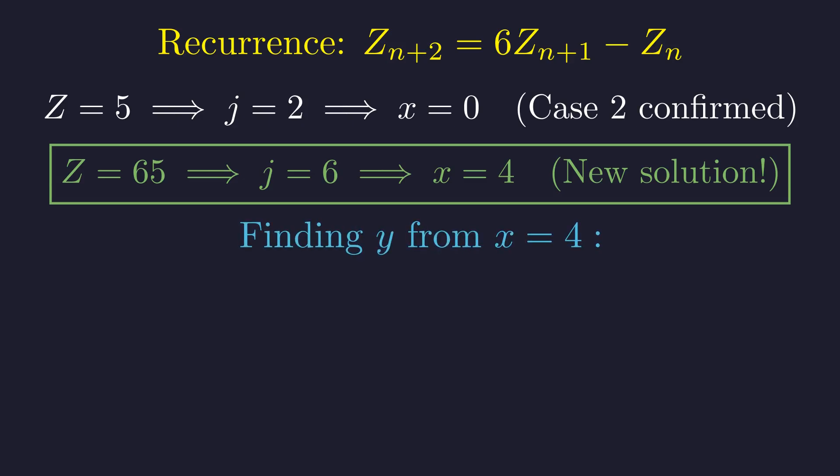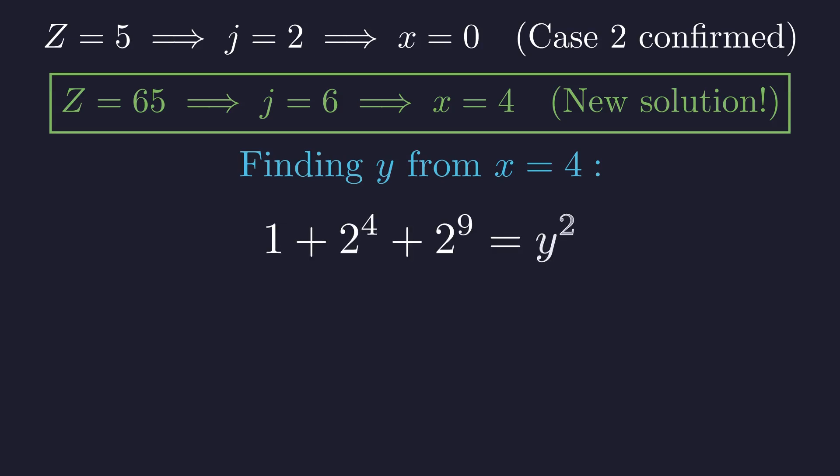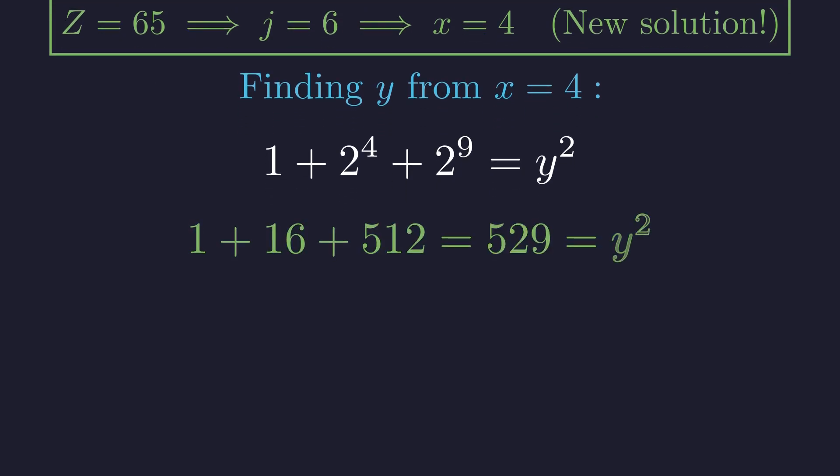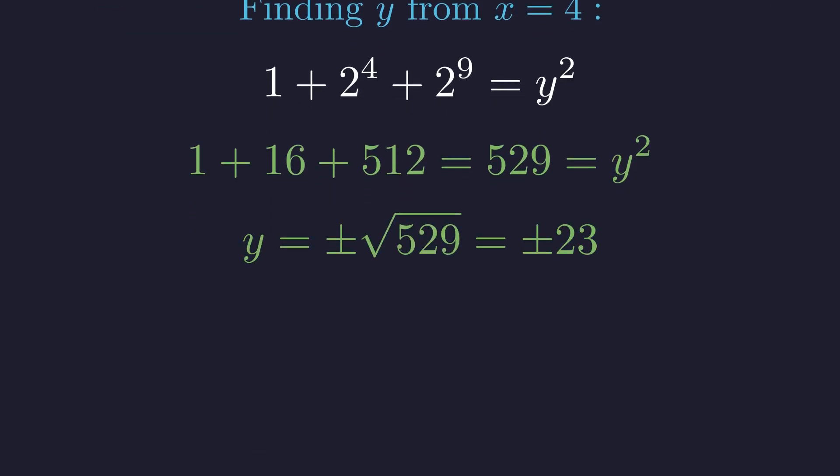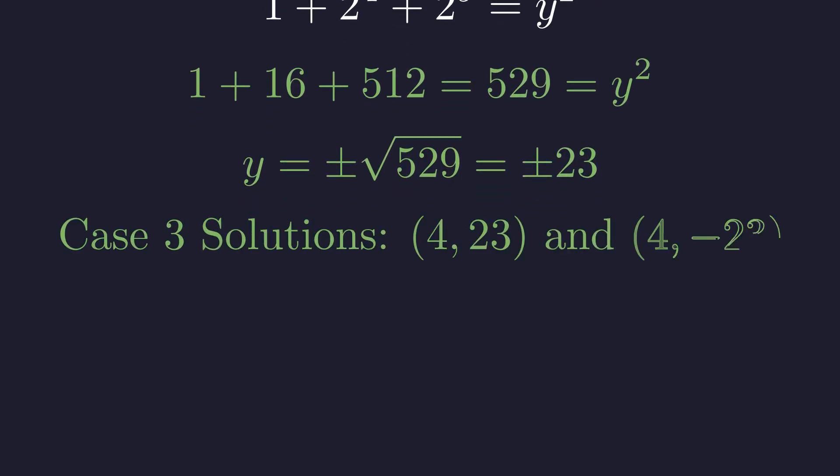Now let's find the corresponding y value for x equals 4. Substituting x equals 4 into our equation: 1 plus 2 to the 4th plus 2 to the 9th equals y squared. This gives us 1 plus 16 plus 512 equals 529 equals y squared. Taking the square root gives us y equals positive or negative 23. This confirms our solution for case 3. So case 3 gives us the solution pairs 4, 23, and 4, negative 23.